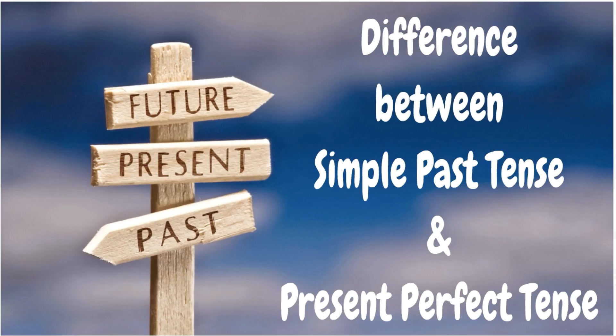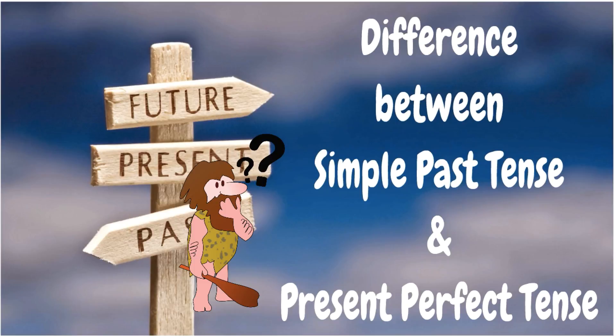Hello everyone. Today we will learn the difference between the simple past tense and the present perfect tense — two tenses that are commonly confused because they are used to denote past events, that is, events that have already happened.